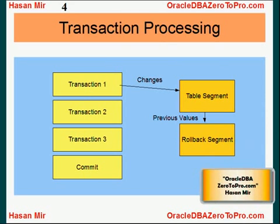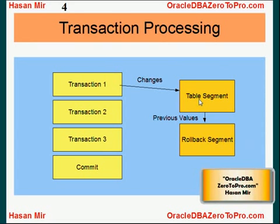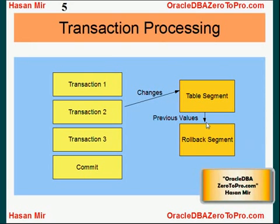So what is the role of the rollback segment? Let's say you enter transaction one — an update statement to a table, modifying some values. While doing that, Oracle stores the previous values in a rollback segment. For example, if you're modifying a name from Scott to Larry, then Scott would be stored in the rollback segment and the actual name value in the table would be modified to Larry. As the user enters transaction two — whether a delete, modify, or insert — the same thing happens: previous values are stored in the rollback segment and changes are applied to the table. The same happens for transaction three.